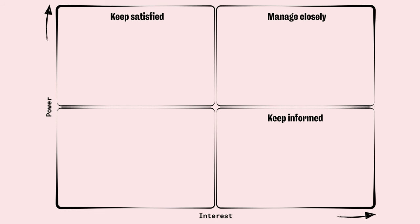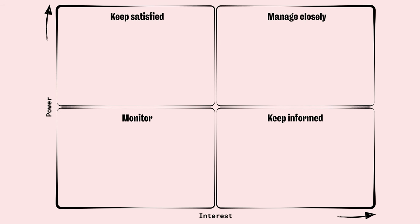Stakeholders in the bottom-right quadrant are interested in your project but don't have much power. Keep them in the know: invite them to research sessions, keep them in the loop with debrief emails or newsletters, and include them in design critiques whenever possible. Stakeholders in the bottom-left quadrant are not worth spending too much time on — they're not really interested and don't have much power — but things can change and they might end up in a different quadrant, so keep an eye on them.